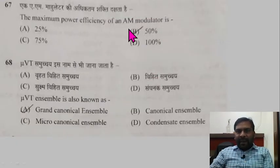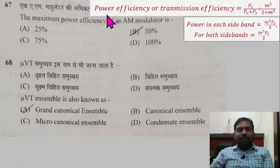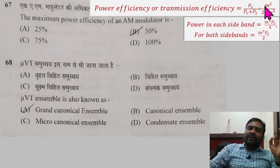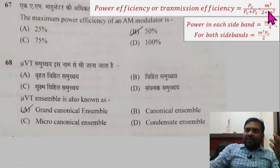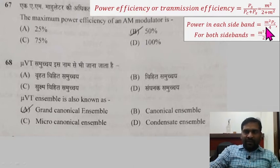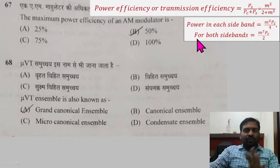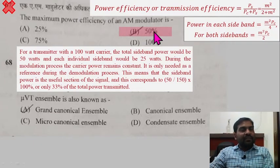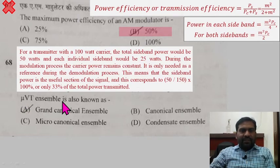Question 67: The maximum power efficiency of an AM modulator. The formula for power efficiency is sideband power divided by carrier power PC, where m is the modulation index. Taking modulation index maximum as 1, the efficiency is 1/3, that means 33%. If asked for power in each sideband, the formula is PC multiplied by m-squared divided by 2, since power distributes equally between the two sidebands. The commission gave 50% as the answer here, which is also not correct.